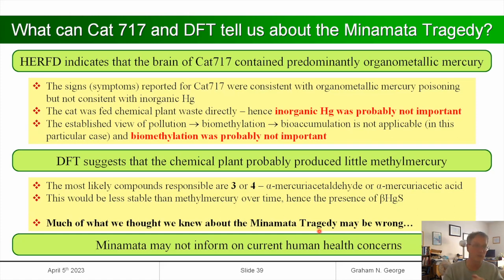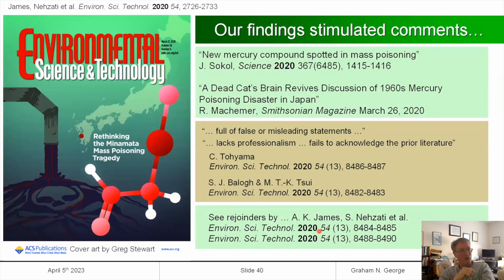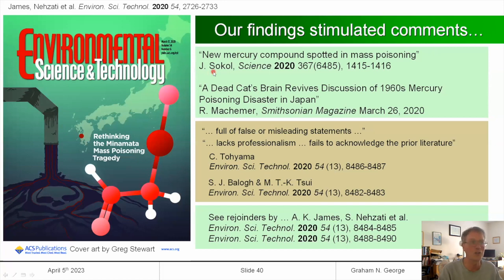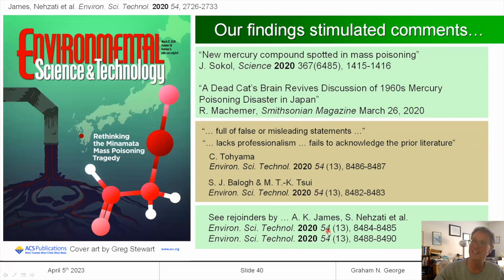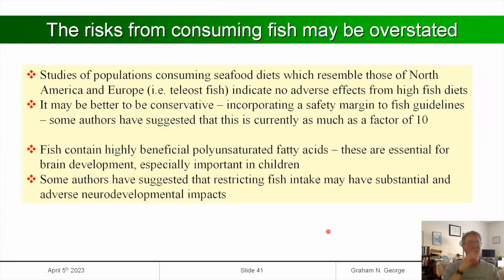This probably means biomethylation was not important in Minamata — so the textbooks may be wrong on this point. DFT suggests the Chisso plant probably produced very little methylmercury and instead produced alpha-mercury acetaldehyde or alpha-mercury acetic acid. We believe much of what we thought we knew about Minamata might be wrong, and therefore the extent to which Minamata can inform us about risks from methylmercury in marine fish may also be wrong. We got the cover of Environmental Science & Technology when we published this, which caused quite a fuss.